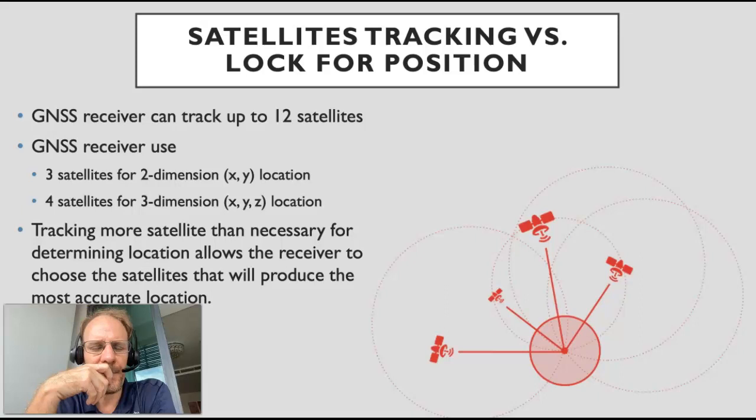Now, believe it or not, you actually need four satellites to do that. If you have three satellites, you can get your x and y location. If you have four satellites, you can get your x, y, and z - in other words, your latitude, longitude, and elevation. Now, there is a difference. We like to use these terms between tracking and lock for position.